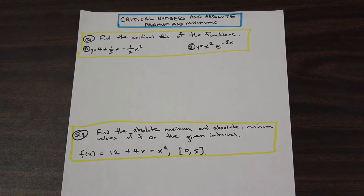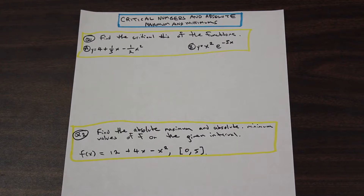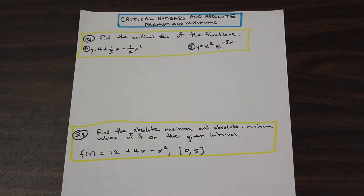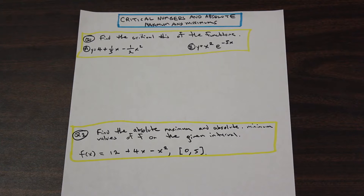This is nearing the end of calc one — probably the second last topic we're going to cover. This is going to tie in with our final graph sketching section, where we're going to show you how to find inflection points, maximums and minimums, critical numbers, and then sketch a function. Then we're going to do optimization, and then we're done guys. So we're almost finished.